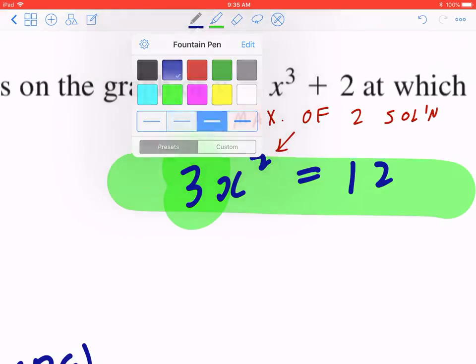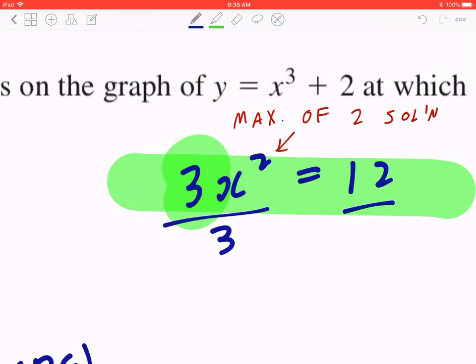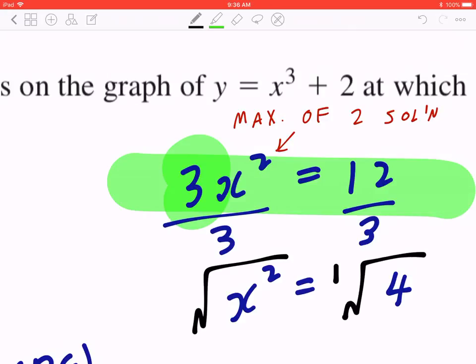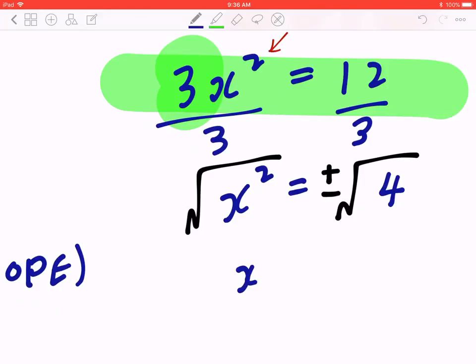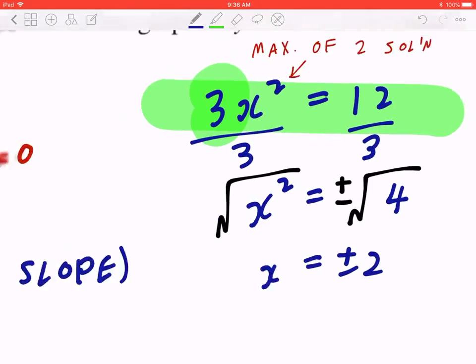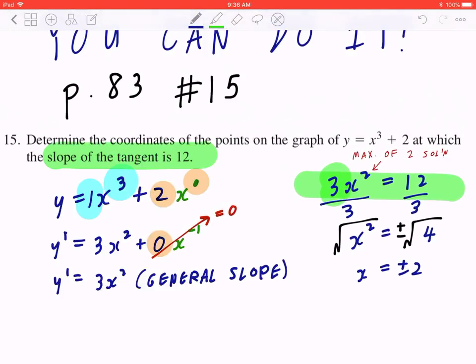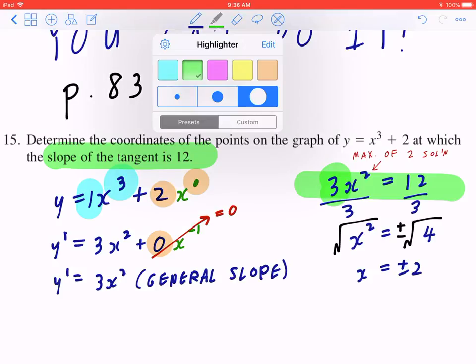The opposite of multiplying by 3 is to divide by 3, so x squared equals 4. The opposite of squaring something is to find the square root, and there are two cases: x equals plus or minus 2. That's not what they're asking. They're not asking just for the x components, they're asking for the exact location, they're looking for the coordinates.